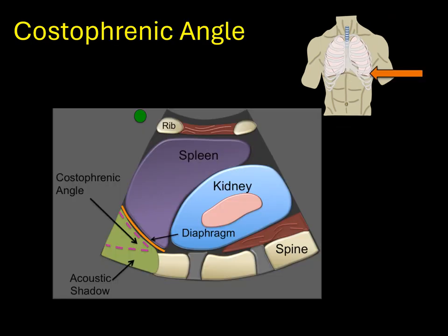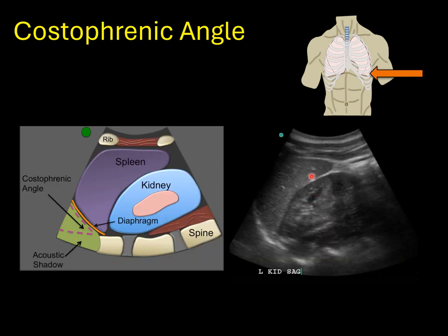The other important anatomical area will be the costophrenic angles bilaterally. This is a left upper quadrant view where you'll notice the spleen, the diaphragm, and normal lung in the costophrenic angle. You'll notice that the spine disappears behind the dirty shadowing that the lung produces — that's normal. In the corresponding ultrasound image, the vertebrae are present here and stop at the diaphragm due to the dirty shadowing from the lung.